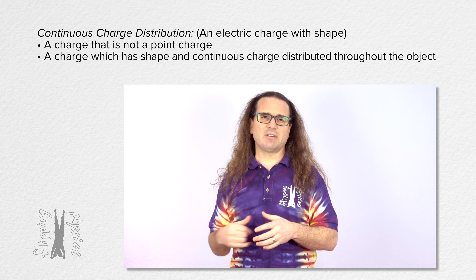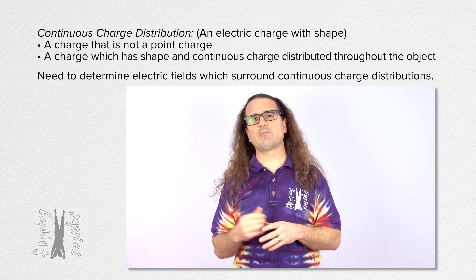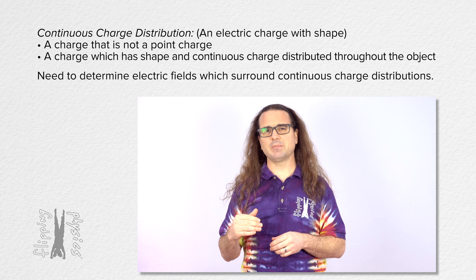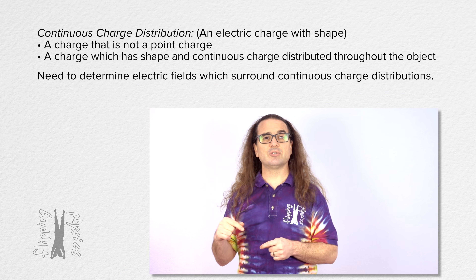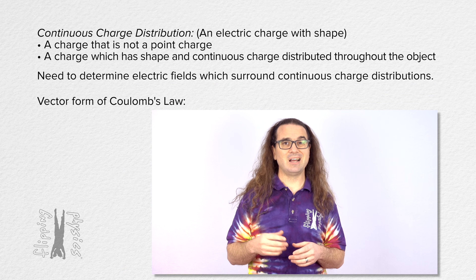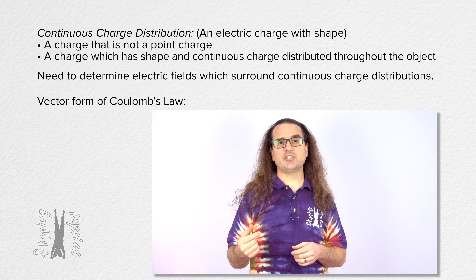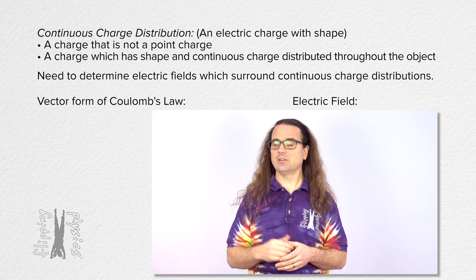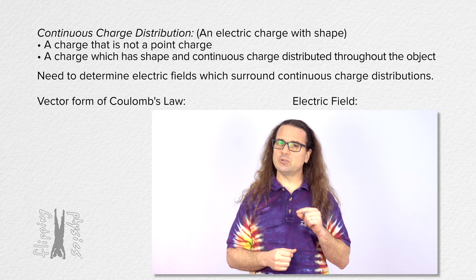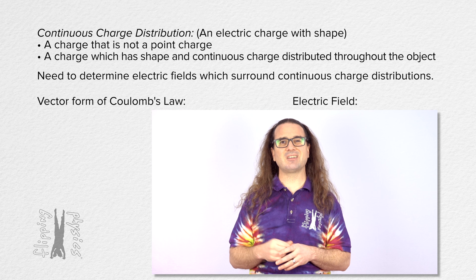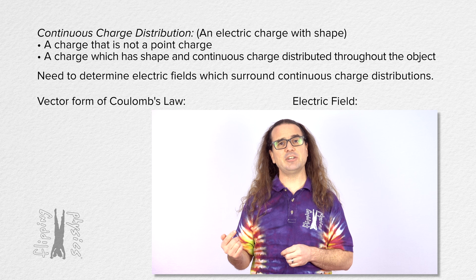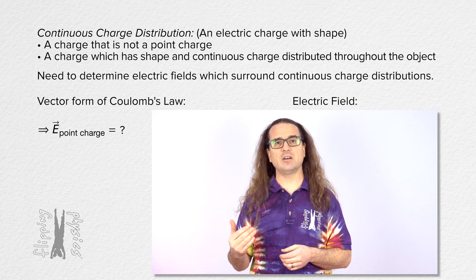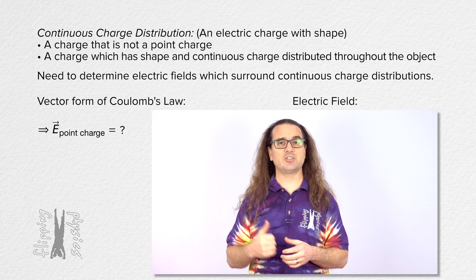In order to find the electric field which exists around a continuous charge distribution, we can use the vector form of Coulomb's law and the equation definition of an electric field. Please use those two equations to find the equation for the electric field which surrounds and is caused by a point charge.